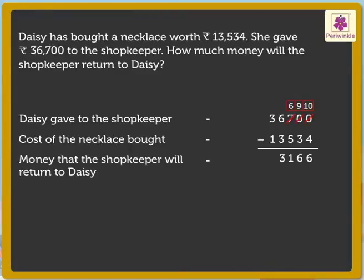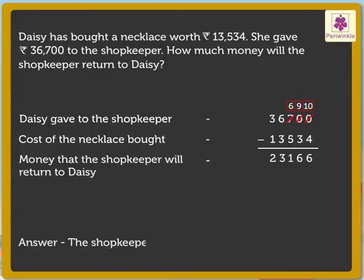Lastly, subtract the ten-thousands: 3 minus 1 is equal to 2. So, we got the answer as 23,166. Thus, the shopkeeper returned 23,166 rupees to Daisy.